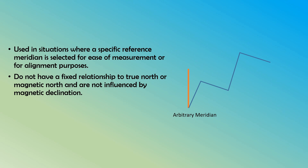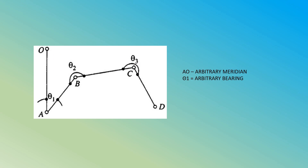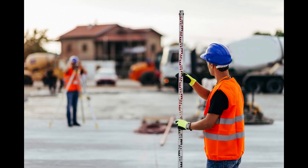As shown in the figure, O and A are two points either defined on permanent structures or fixed by measurements with respect to points identifiable on a permanent structure. AO is the arbitrary meridian chosen, and the angle theta 1 is the arbitrary bearing of the line AP with respect to the meridian AO. Arbitrary bearings are typically used in specific surveying applications where the chosen reference meridian is known and agreed upon by all parties involved, providing a relative direction for operations within that specific project.